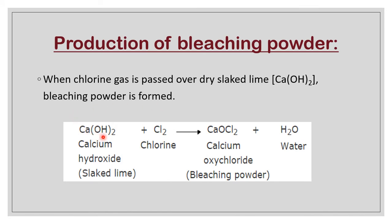Ca(OH)₂ — that is slaked lime — and we pass Cl₂. So CaOCl₂ is formed. The remaining H₂O comes out as a by-product which escapes to the atmosphere, and the bleaching powder remains for use.